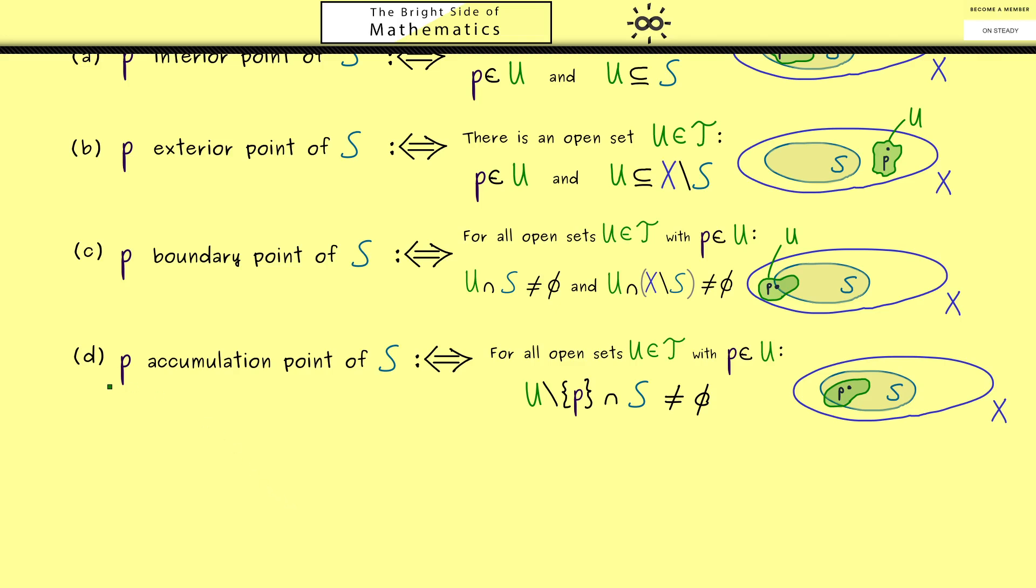However, now by having these names for points, we are also able to define names for sets. But don't worry, these are not complicated anymore. For example, for the set S we can define S°. This one is simply the collection of all points p in X that fulfill that p is an interior point of S.